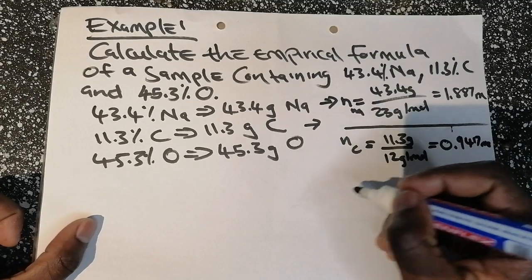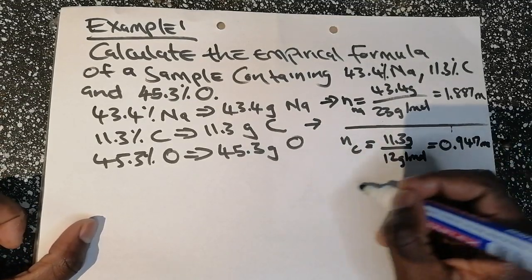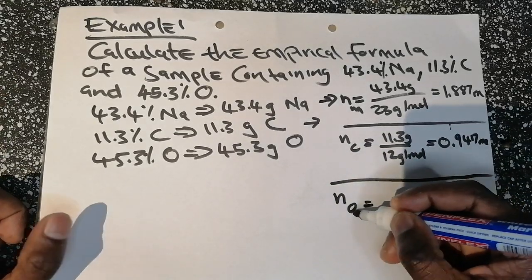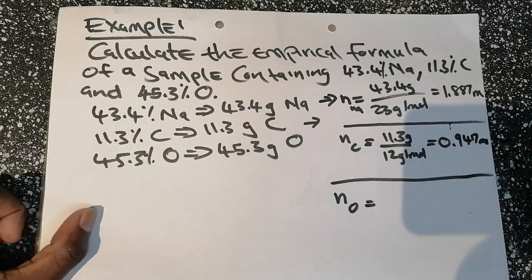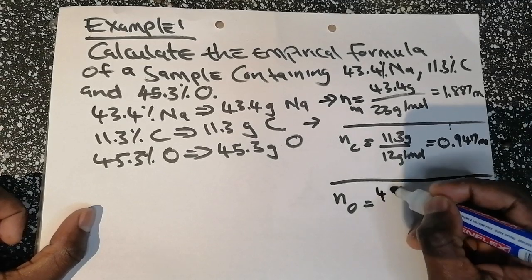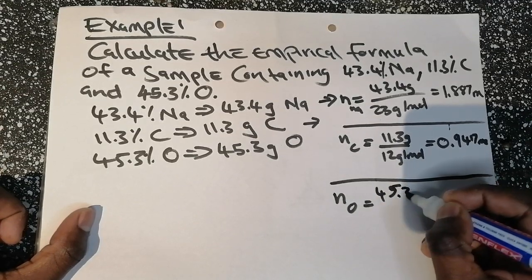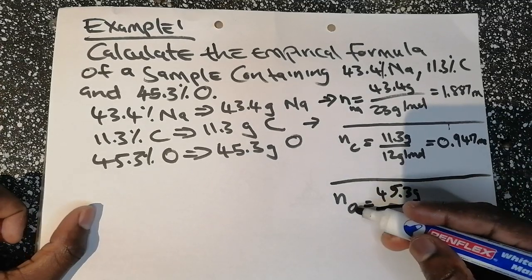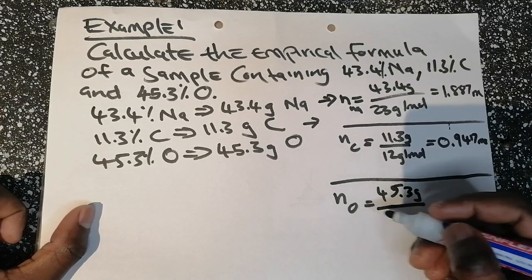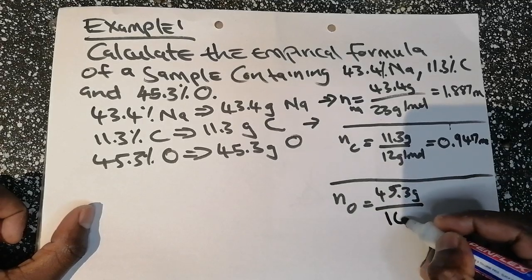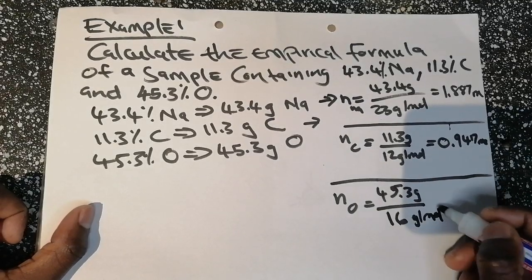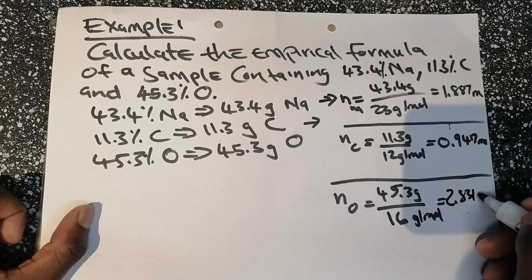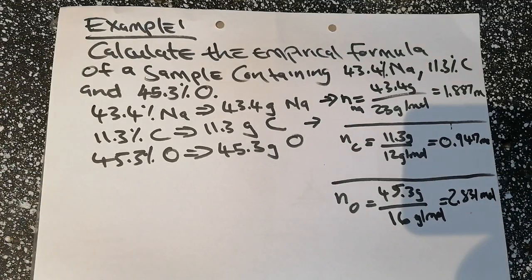For oxygen: we write it as one element, not a diatomic molecule. So moles = 45.3 grams divided by the atomic mass of one oxygen atom, which is 16 g/mol — not 32 (which would be O₂). That gives us 2.831 moles of oxygen. Step two is now complete.